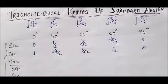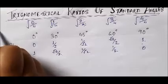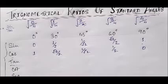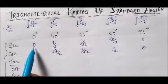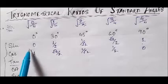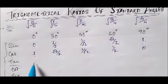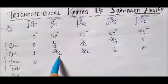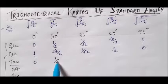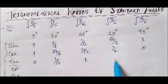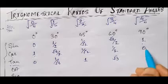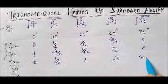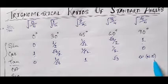Next we have tan. As we know, tan equals sin divided by cos. So for tan 0 degree: 0 divided by 1 equals 0. For tan 30 degree: 1/2 divided by root 3 by 2 gives 1 by root 3. For tan 45 degree it is 1. For tan 60 degree it is root 3. And for tan 90 degree, we are dividing 1 by 0, so the answer is infinity, or not defined.